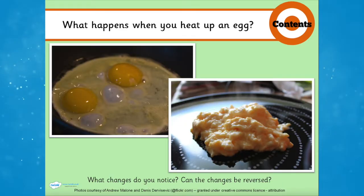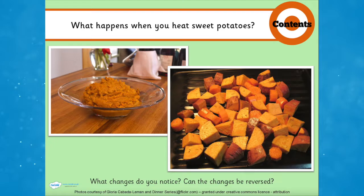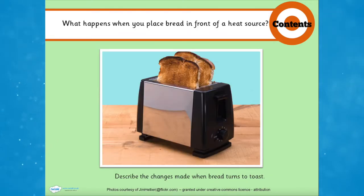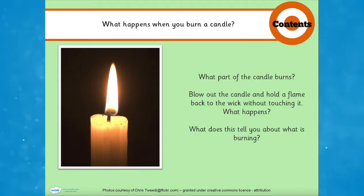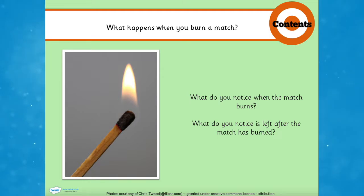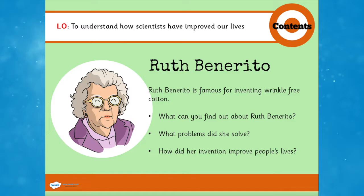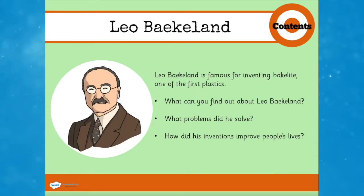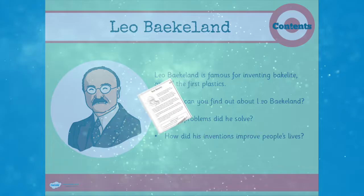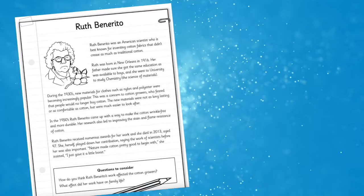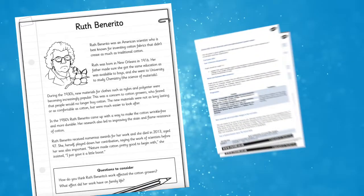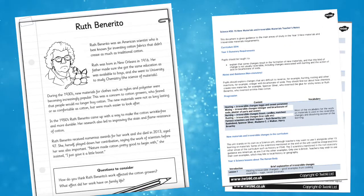This PowerPoint is perfect for working on irreversible changes. There are five main lessons which can be broken down into more if needed, with topics such as heating, mixing, burning, and rusting, as well as famous scientists such as Ruth Benarito, who pioneered innovative materials. In the pack there is also a research task as well as an experiment for your pupils to complete.